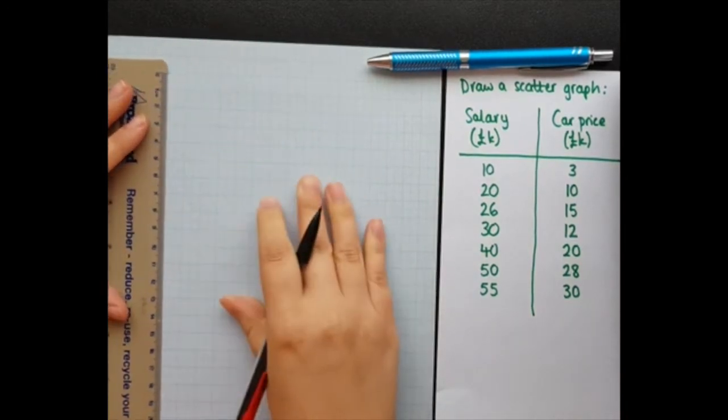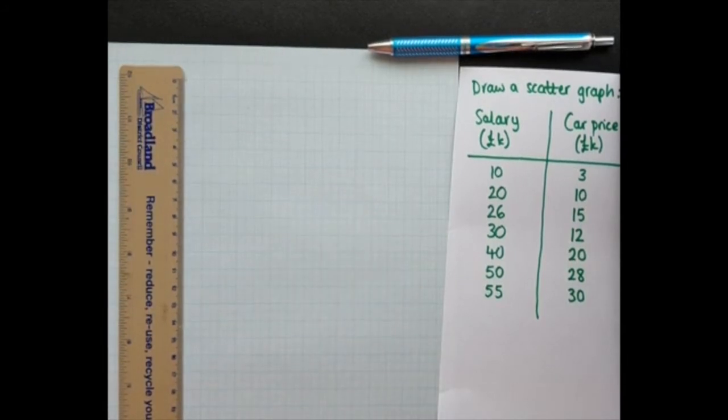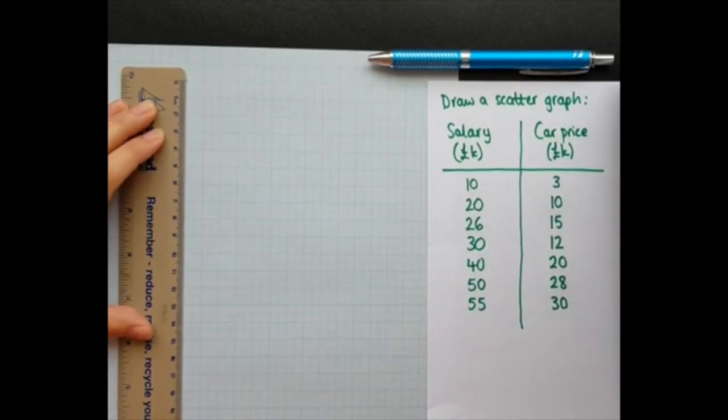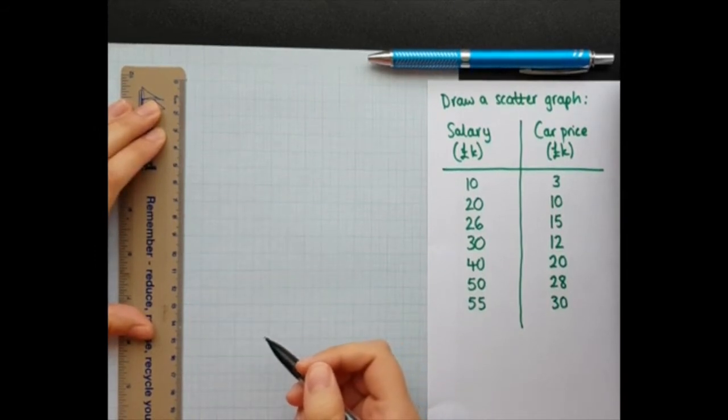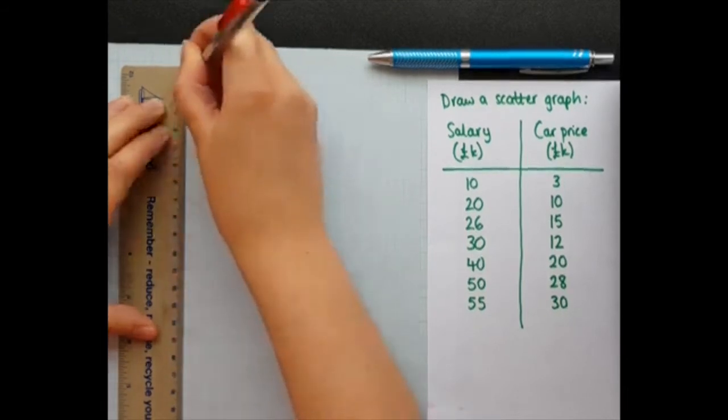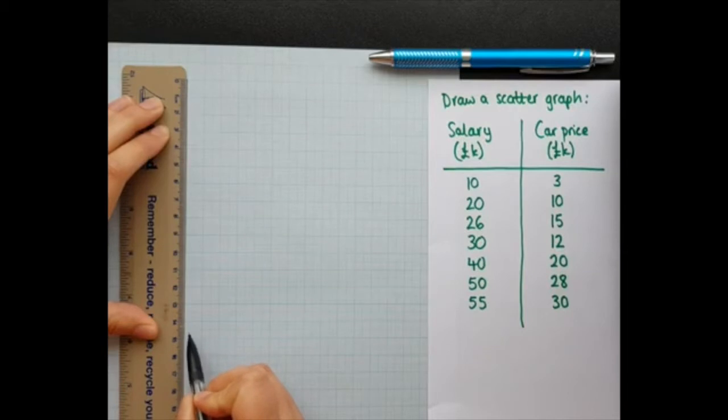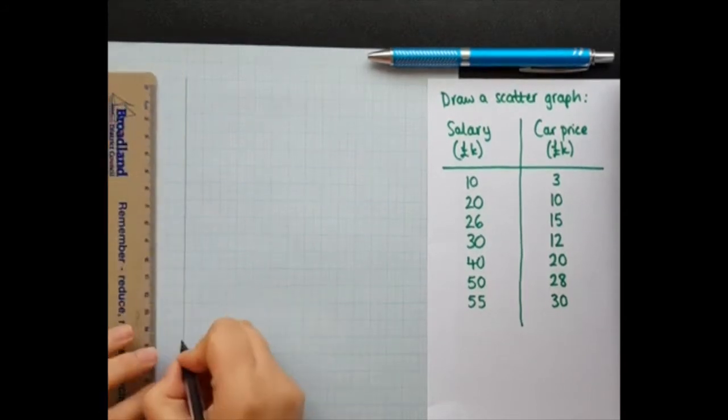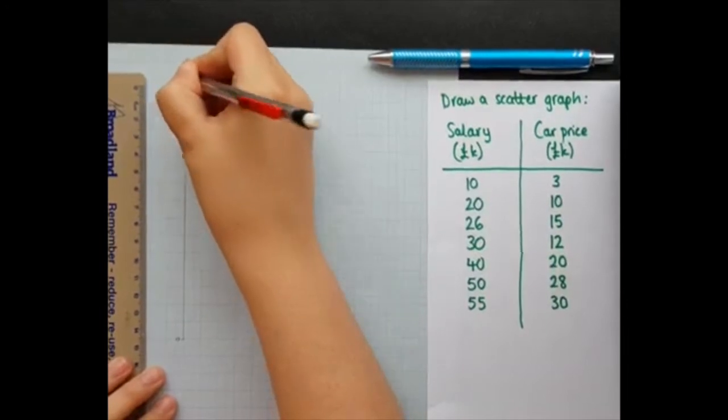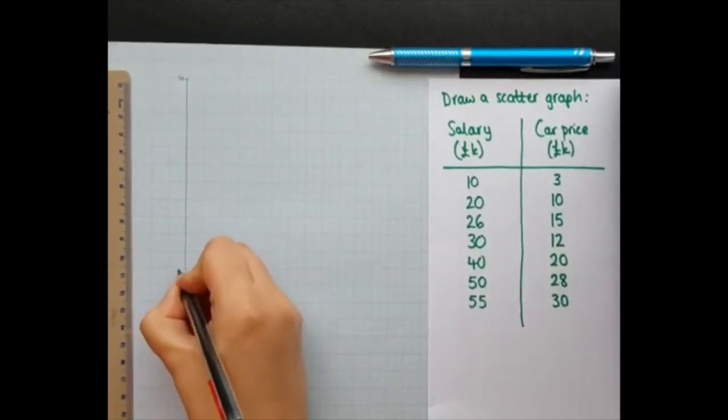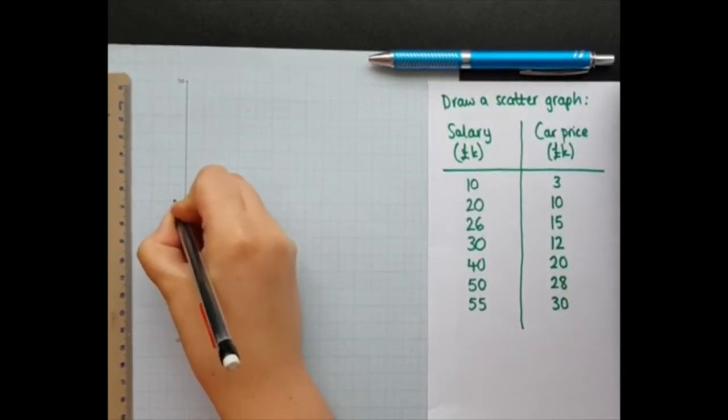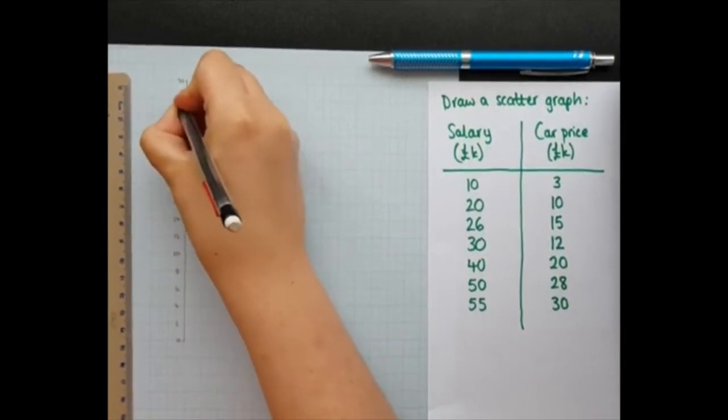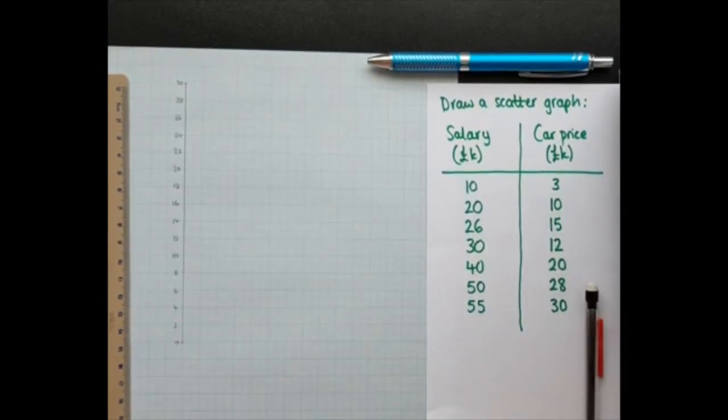So I'm going to do my y-axis first. So that's my salary. Sorry, that's my car price. So I'm going to go up to 30 which means 15. I'm going to do 15 of these centimeter boxes and each one of those will be two. So we're starting at zero going up to 30. 16, 28, 30. There we go.